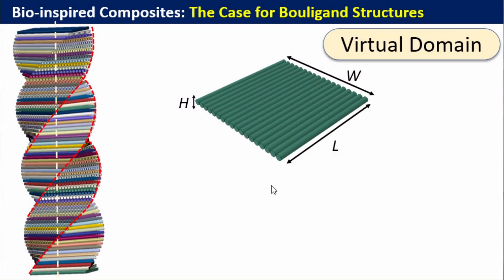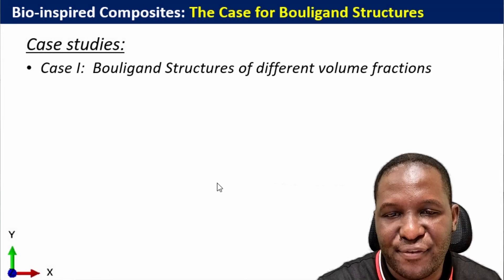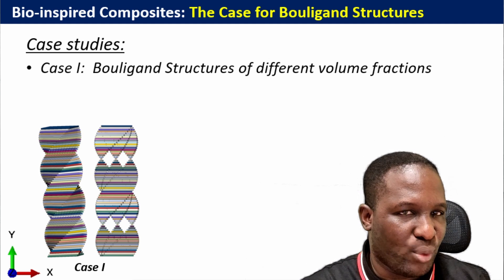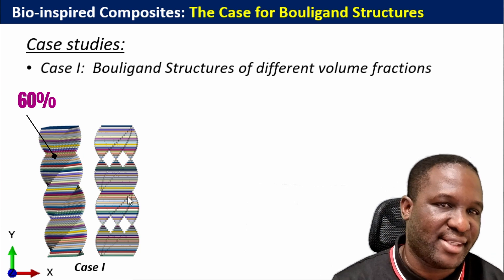Looking at the virtual domain: each laminar unit has a length, a width, and a height. In this case we're modeling with a 200 by 200 micron length and width, a height of 12 microns, a fiber thickness of 10 microns, a fiber volume fraction of 60%, and an initial rotation angle of 5 degrees. The first case will look at the Bouligand structure with different volume fractions — 60% versus around 10%.